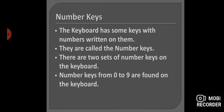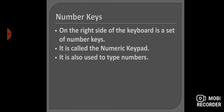Let's talk about the number keys. The keyboard has some keys with numbers written on them — they are called number keys. There are two sets of number keys on the keyboard: one on the top left side and one on the right side. Number keys from 0 to 9 are found on the keyboard. The right side set is called the numeric keypad, and it is also used to type numbers.